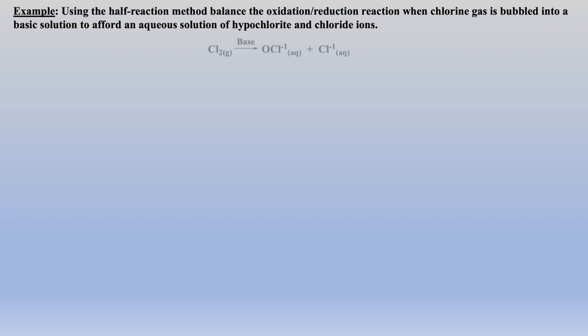In this second example, we use our nomenclature to write an unbalanced equation from the word problem. Look at how I have written 'base' on the arrow so that we are working in a basic solution. Now we identify the 2 half-reactions — oxidation and reduction — and we will first apply the balancing steps to the reduction half-reaction.